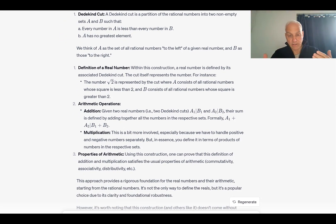Arithmetic operations: Addition, given two real numbers, i.e. two Dedekind cuts, A1, B1, and A2, B2. Their sum is defined by adding together all the numbers in the respective sets, formally A1 plus A2 and B1 plus B2. Multiplication, this is a bit more involved, especially because we have to handle positive and negative numbers separately, but in essence you define it in terms of products of numbers in the respective sets. And properties of arithmetic: using this construction, one can prove that this definition of addition and multiplication satisfies the usual properties of arithmetic, commutativity, associativity, distributivity, etc.